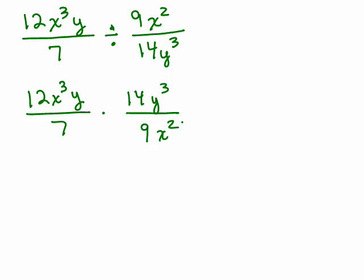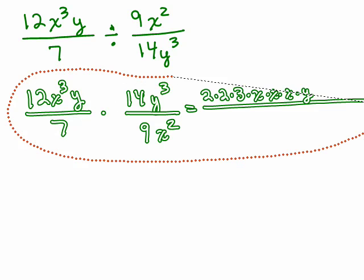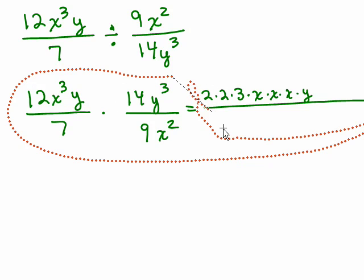Step 1 is to multiply by the reciprocal. And now you see if you can cancel anything, and if you want, you could even write it out the long way, every single factor, or you could use your laws of exponents. So if you wrote it all out the long way, for 12, I'm going to do the numbers first. 12 is 2 times 2 times 3, and then we'd have x times x times x times y, and I think I'm going to run out of room here, so I'm going to make this a little bit smaller.